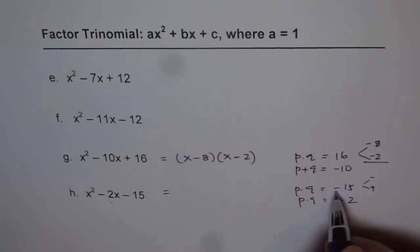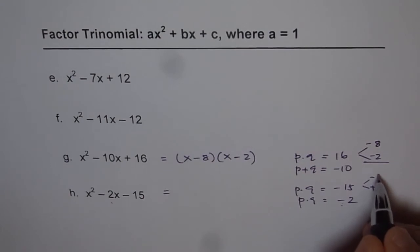When multiplied, we want minus 15. That is 5 times 3. 5 times 3 gives us 15. And when you add them, we want 2. And that 2 is minus. So 5 has to be negative and 3 positive.